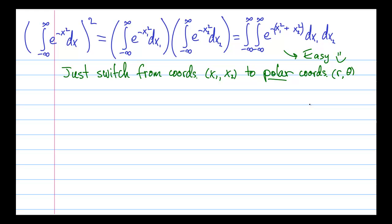And to switch to polar coordinates, we simply rewrite x1 squared plus x2 squared as r squared. This is essentially the Pythagorean theorem. And then we rewrite the dx1 dx2 area element as r dr d theta.